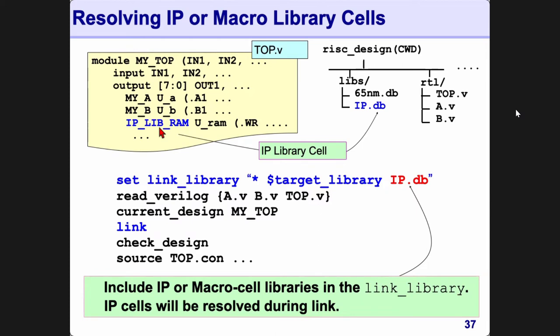Now that's with Verilog files. How do you read in IPs? Here we're showing an IP with a RAM example, but the same rules apply for IO pads, analog blocks, any CPU or interface logic IPs. It doesn't matter how big the IP is — it could be 10 million gates. IP is very simple: you will get a library for that IP from your IP vendor or your foundry. All you have to do is put that IP inside your link_library.